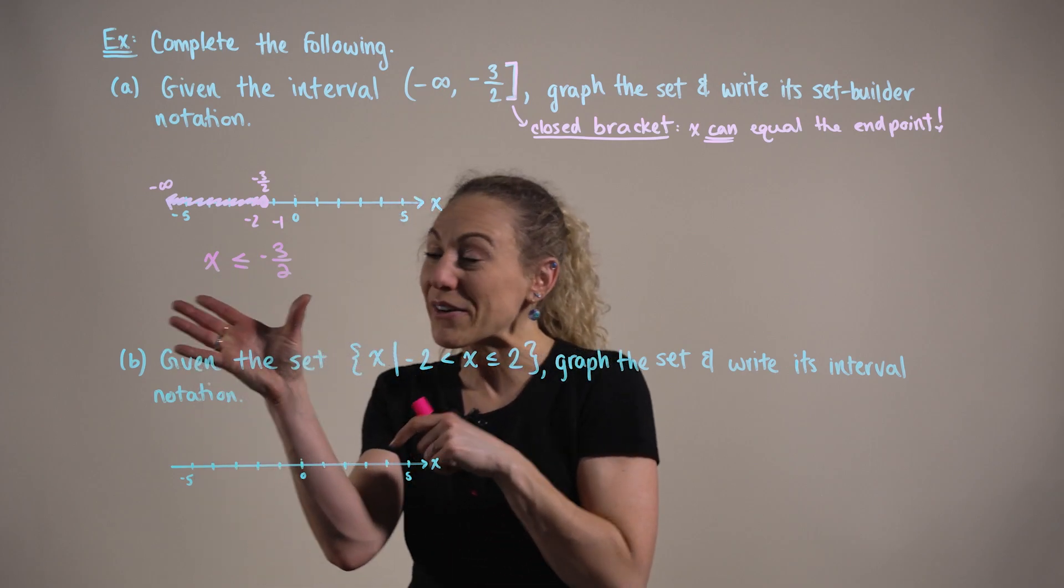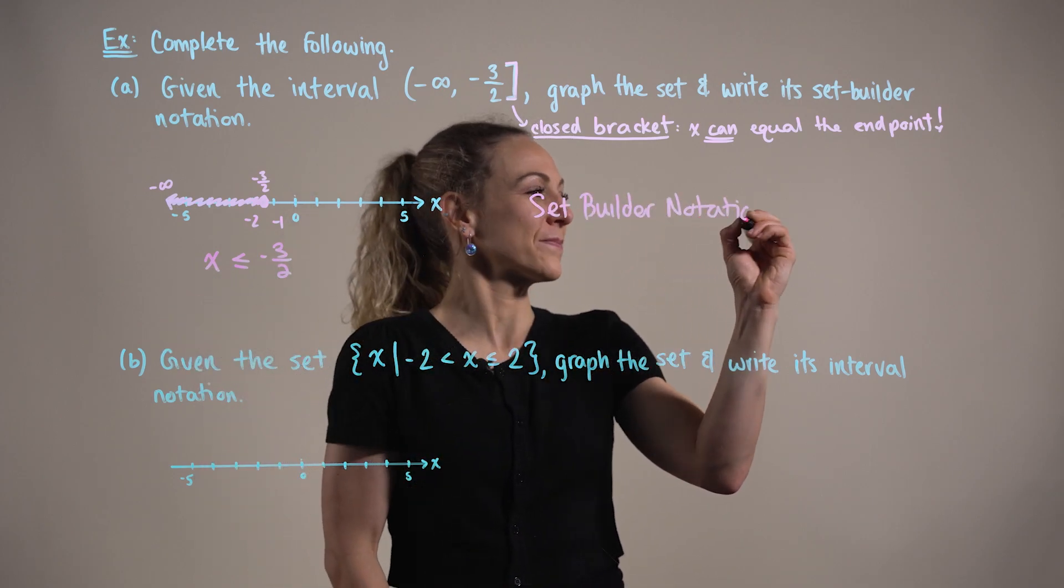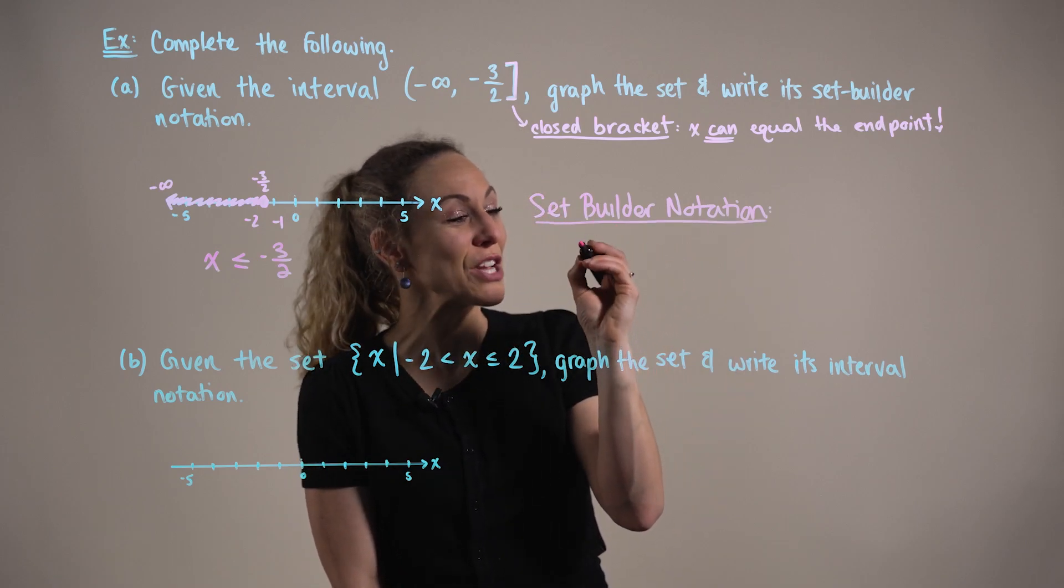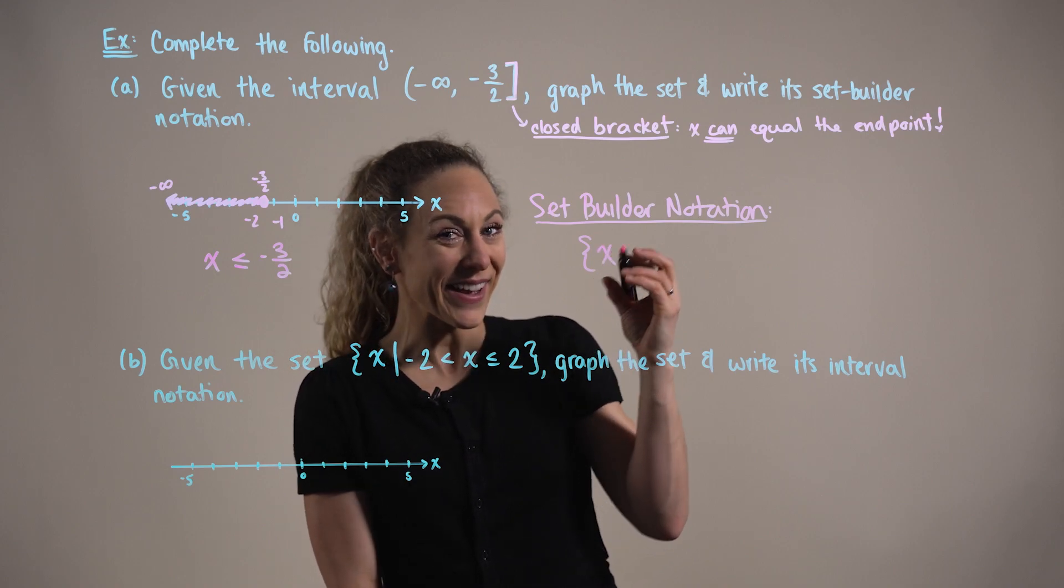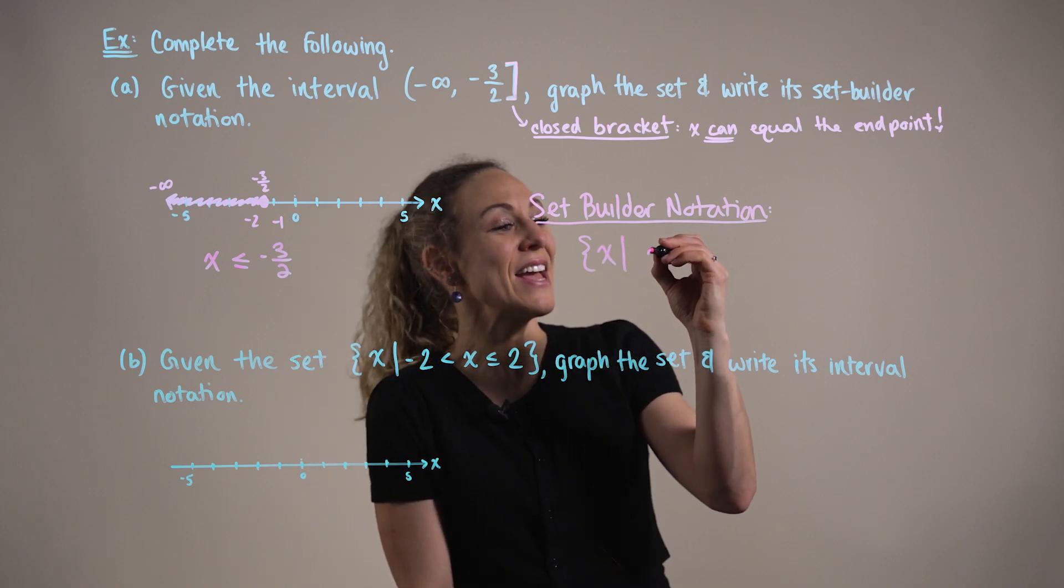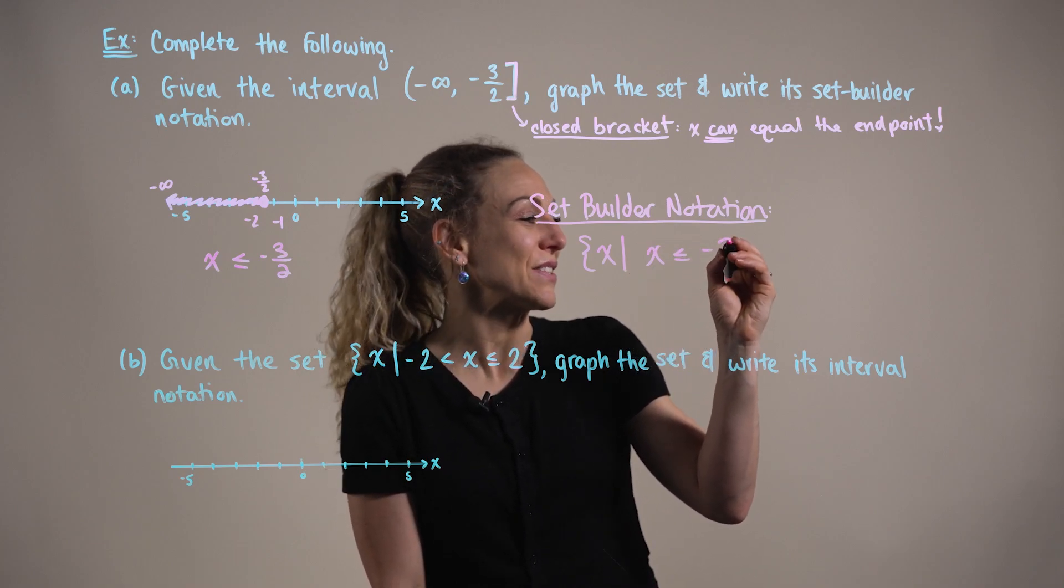With this inequality, we can now convert this and write our set builder notation. In set builder notation, we can say that we are working with the set of all real numbers x such that x is going to be less than or equal to minus three halves.